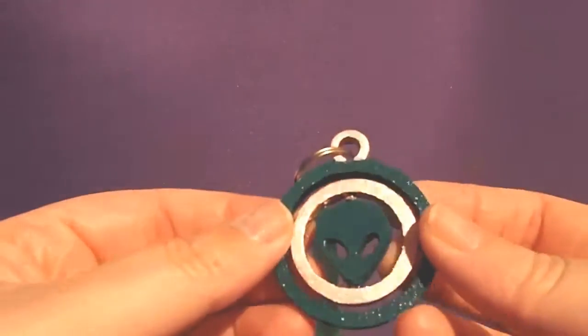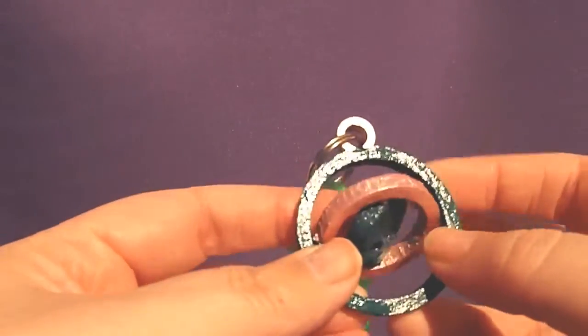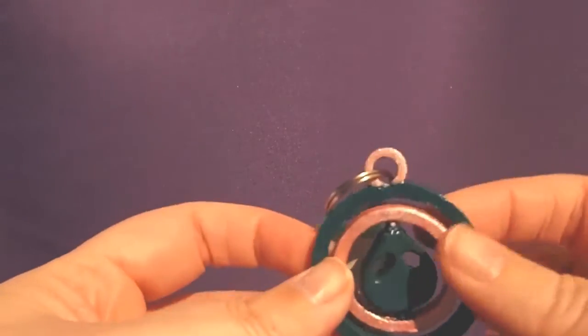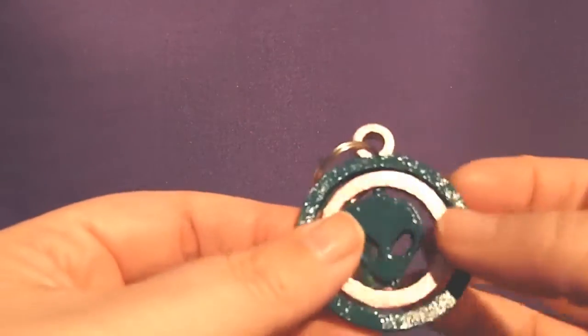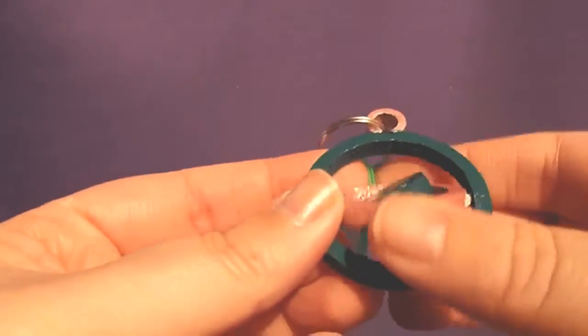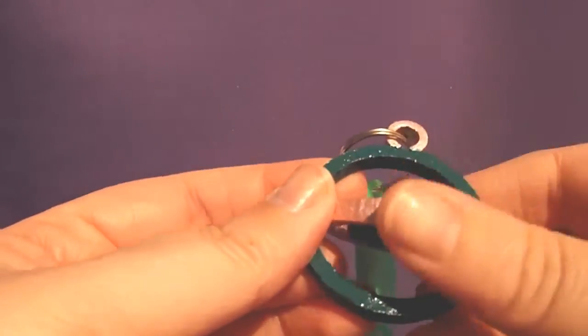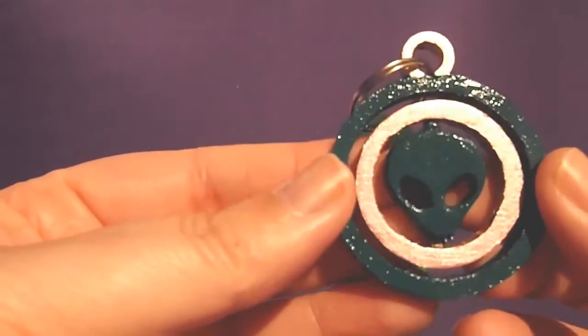Then we have this one which is actually a moving piece and it prints it as one piece and you then just fiddle with it until you get it to spin. But it's an alien keyring and it's in sort of a dark green and a very light pink.